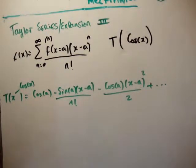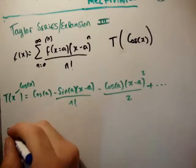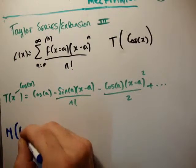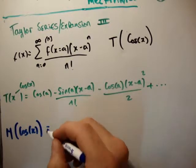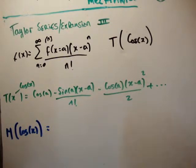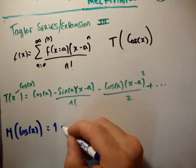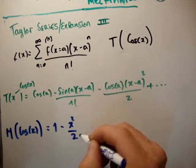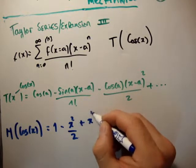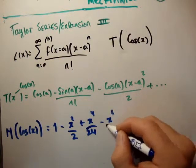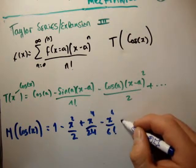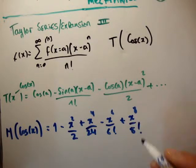So let's get the Maclaurin series, or the Maclaurin expansion of cos x. This time we set all our a equal to 0. If we do that, we're going to get 1 minus x squared over 2 plus x to the 4 over 24 minus x to the 6 over 6 factorial plus x to the 8 over 8 factorial.